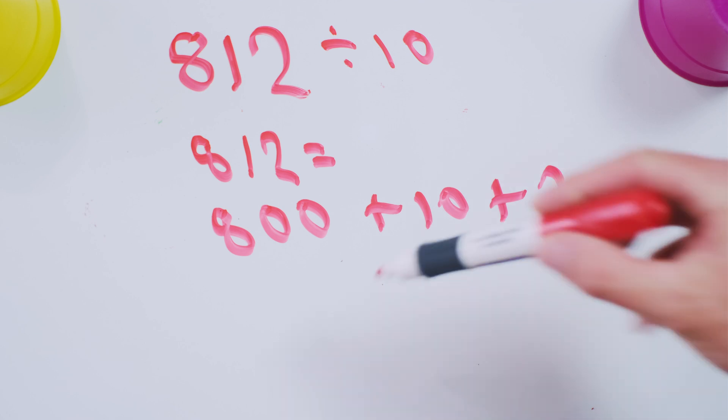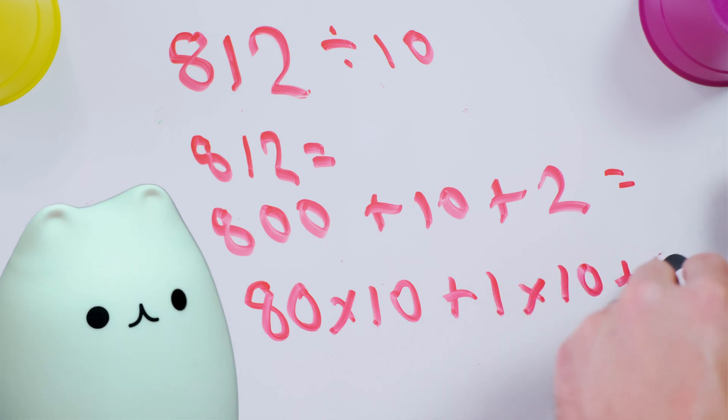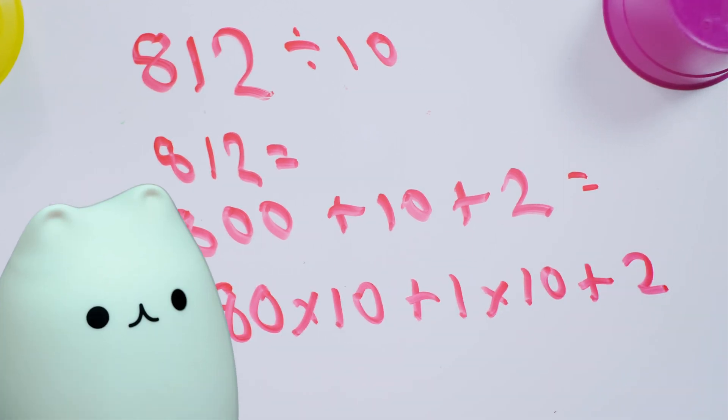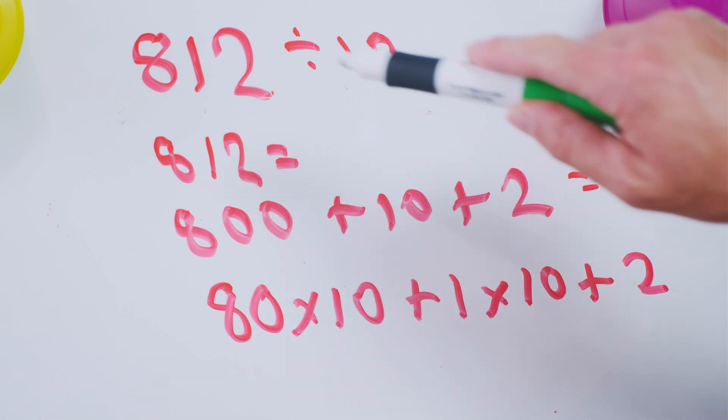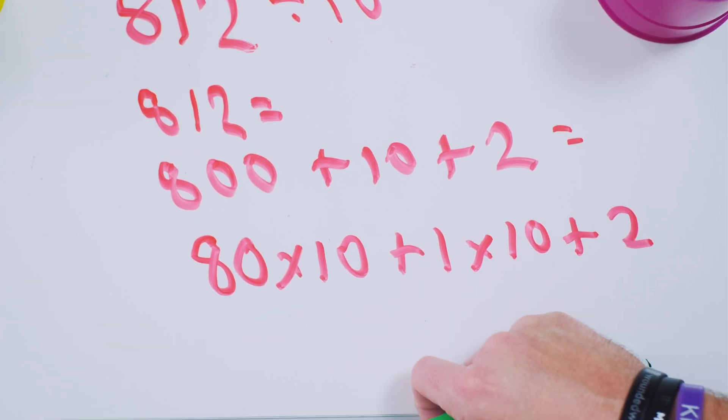Okay, so where does that lead us? I'm glad you asked. That's 80 tens plus one ten plus a good old whopping two. So when you divide 812 by 10, now it's really obvious what you got to do.